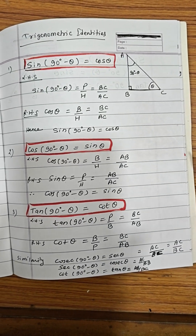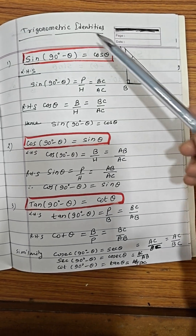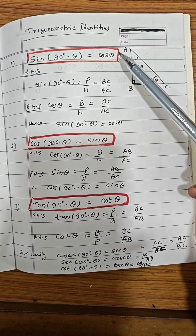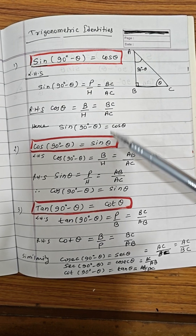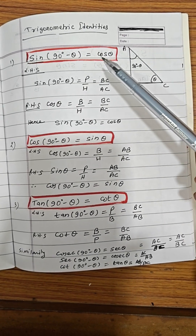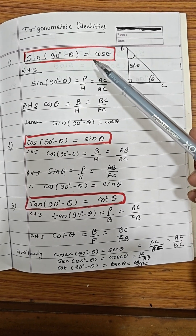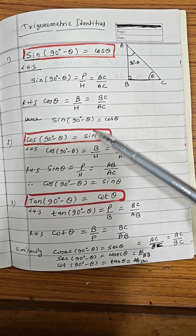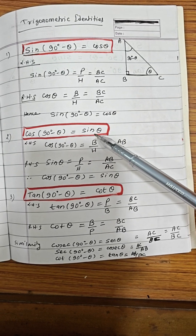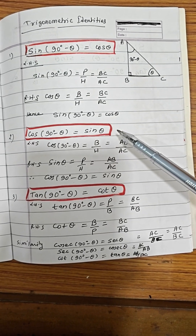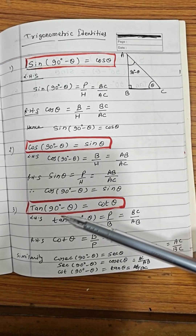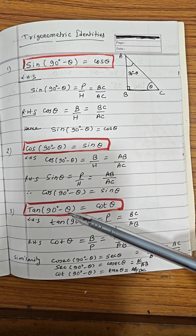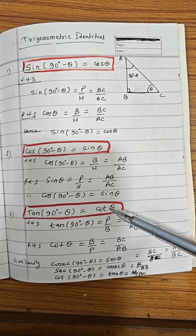Now learn about the trigonometric identities. I have written three identities. One is sin(90° - θ) = cos θ. Second one is cos(90° - θ) = sin θ. Third one is tan(90° - θ) = cot θ.